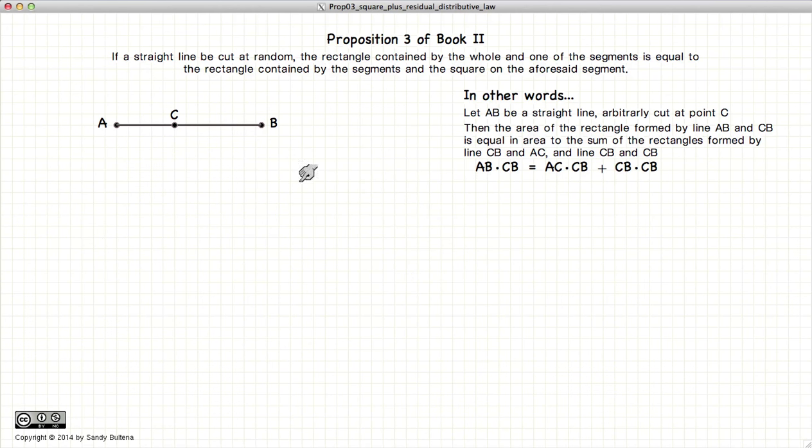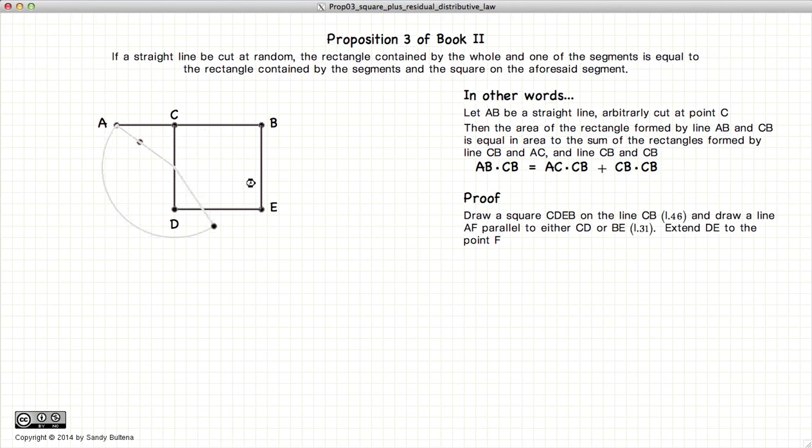So the first thing we're going to do is to draw a square on CB, then we're going to draw a line parallel to CD from the point A to the point F, and extend the line DE to the point F.